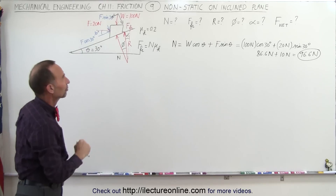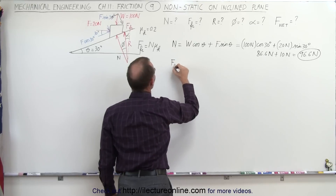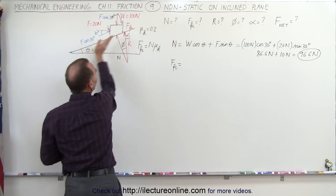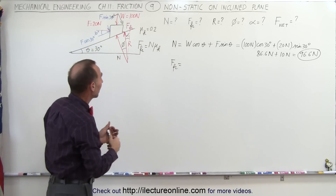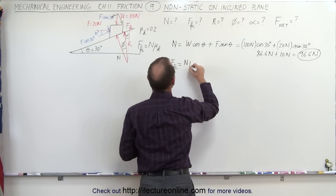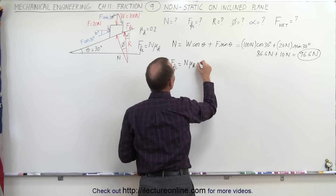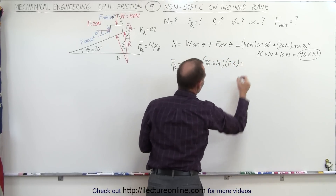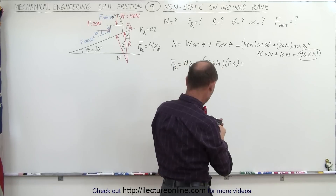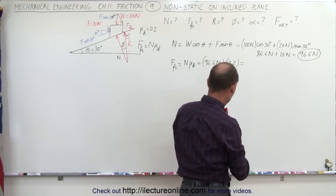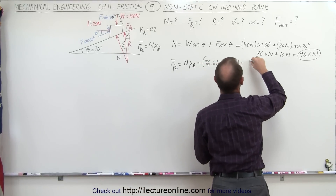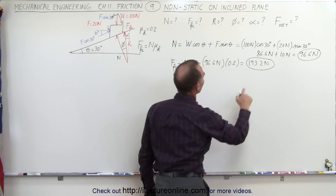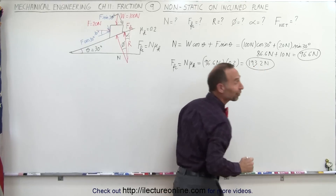From that we can find the friction force. We're going to assume the net force is acting down the incline, which means the friction force acts in the opposite direction — up the incline. The friction force equals the normal force times the kinetic coefficient of friction: 96.6 newtons times 0.2. That gives us 19.32 newtons as the friction force.